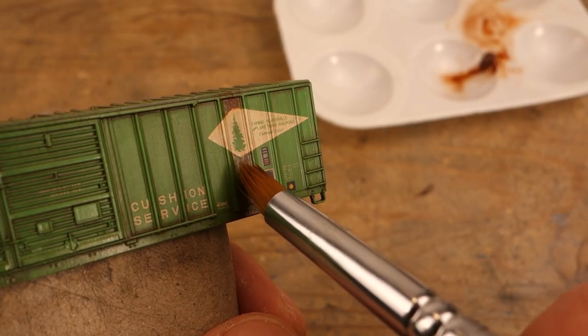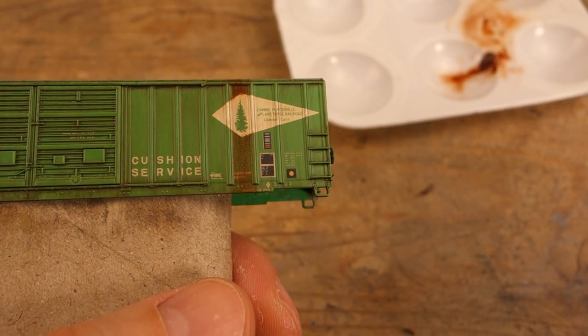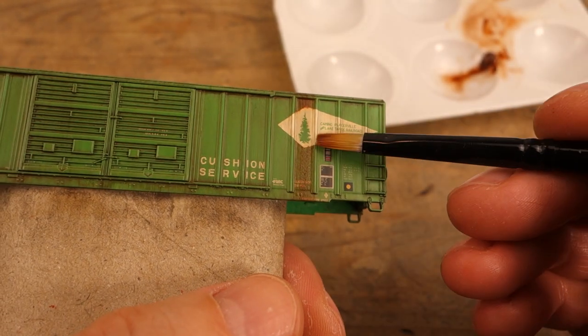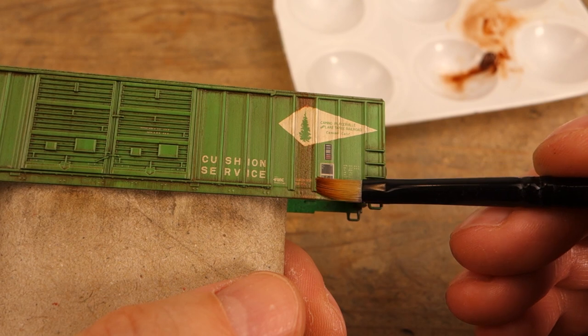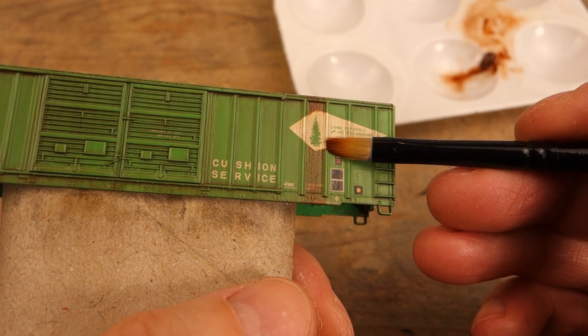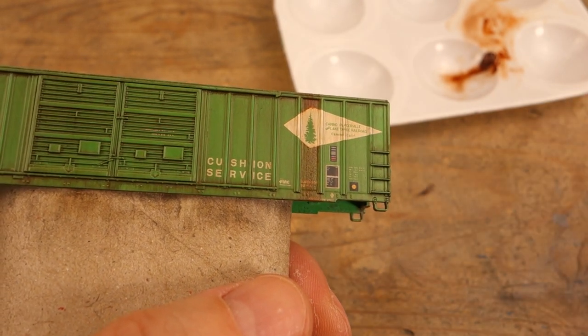After the clean up was done I felt that the part below the logo was too streaky so I used a small and dry stipple brush to gently dab the paint into a more uniform texture. I let this layer dry for a while before sealing it.